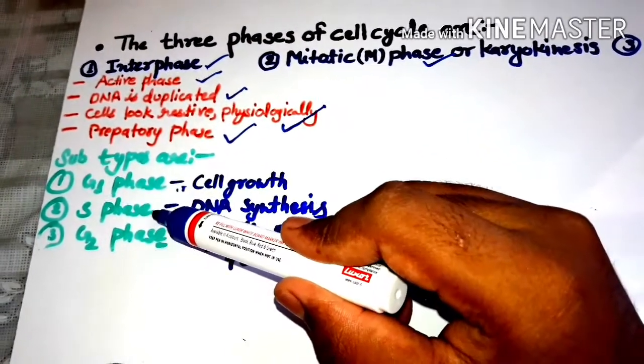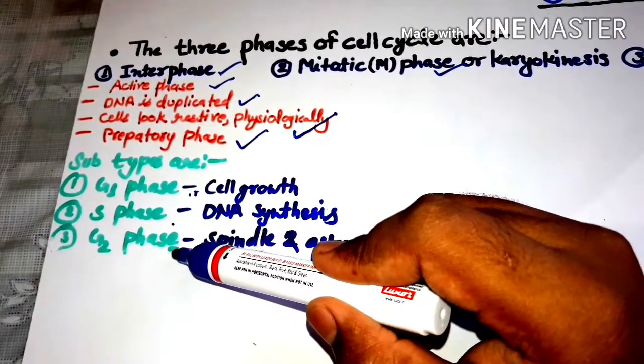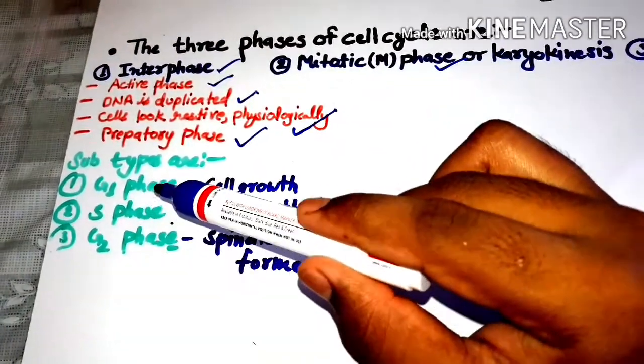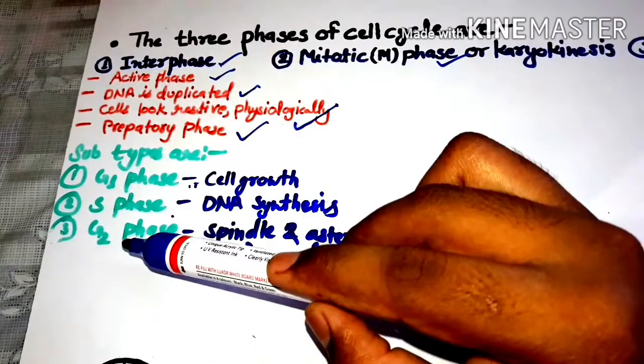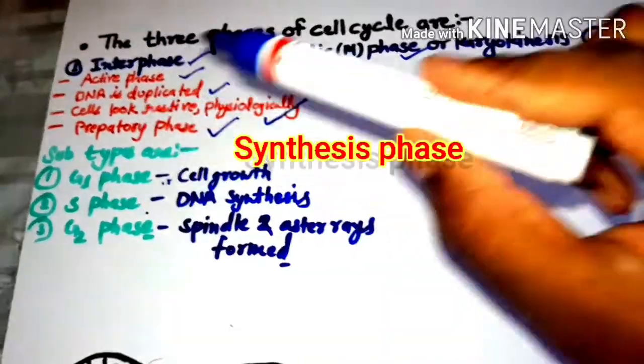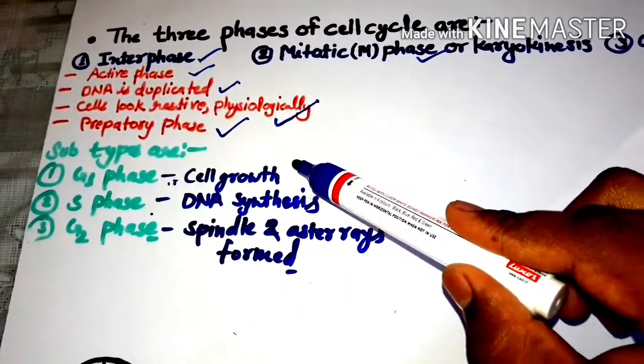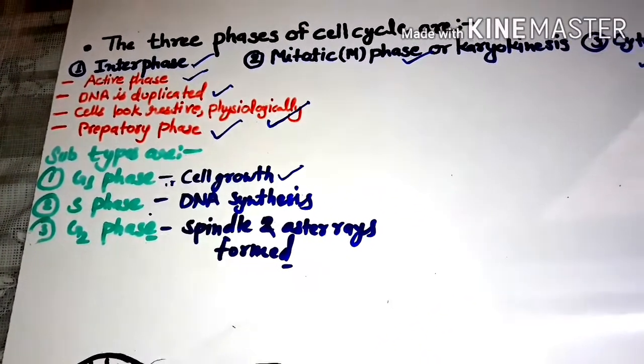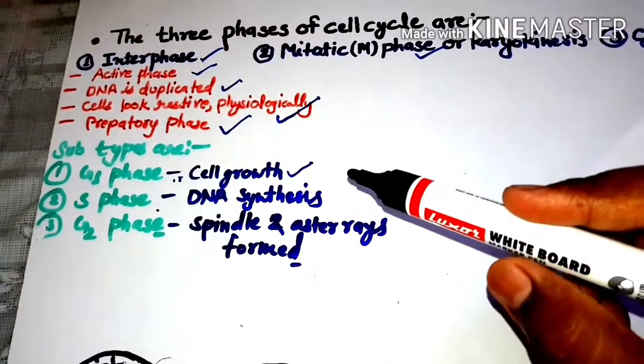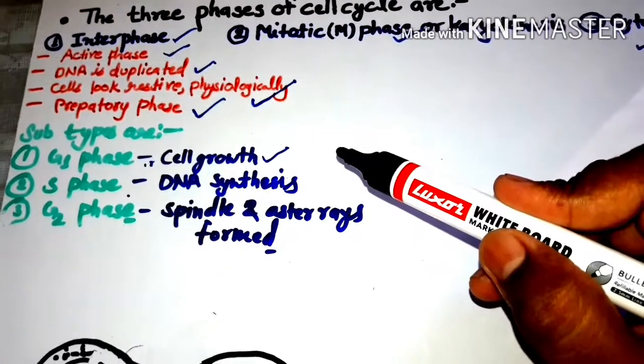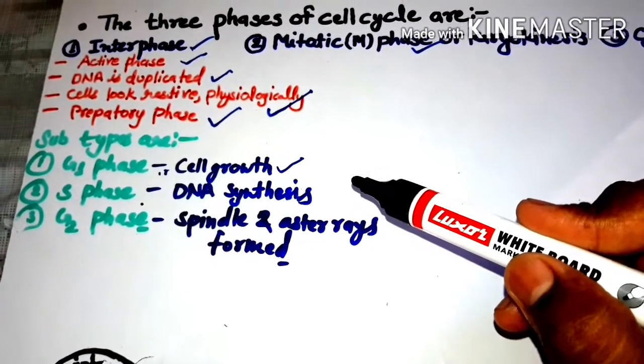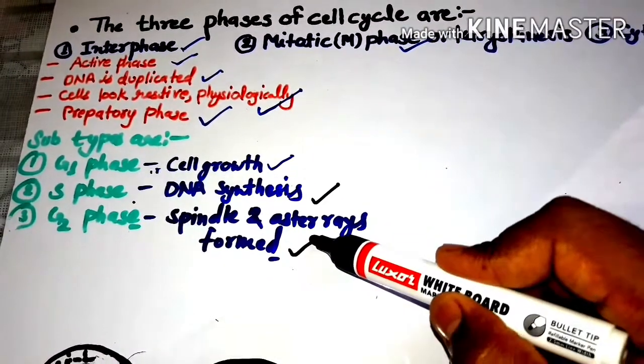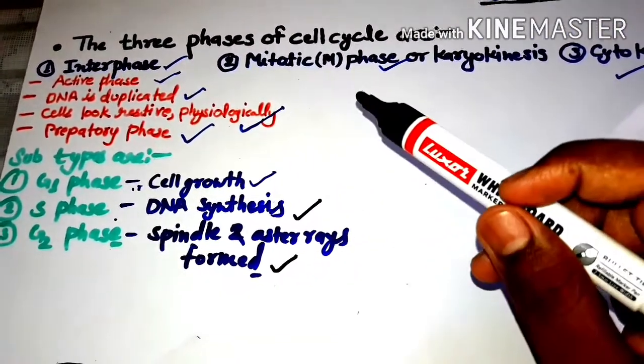Interphase is subdivided into three phases: G1 phase or GAP1 phase, S phase or synthesis phase, and G2 phase or GAP2 phase. G1 phase stands for GAP1 phase, not growth phase. In G1 phase, growth of cell takes place. In S phase, synthesis or replication of DNA takes place. In G2 phase, spindle and asters are formed.